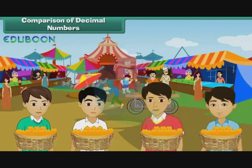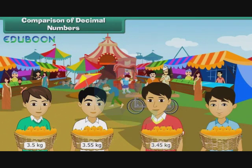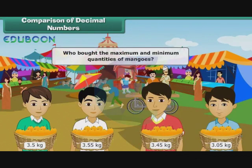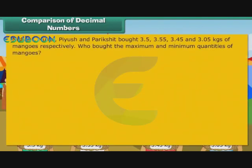Nishant, Mukul, Piyush, and Parikshit bought 3.5, 3.55, 3.45, and 3.05 kgs of mangoes respectively. Who bought the maximum and minimum quantities of mangoes? Let us first arrange the decimal quantities in descending order, that is, the decreasing order of values.